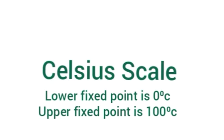Now let us see some thermometric scales. The Celsius scale is commonly used to measure temperature. The lowest point, or lower fixed point, on this scale is 0 degree centigrade — that is the temperature at which pure ice melts. The highest point, or upper fixed point, is the temperature at which pure water boils, and that is 100 degree centigrade.